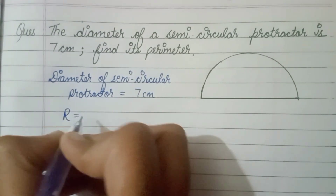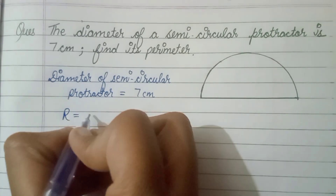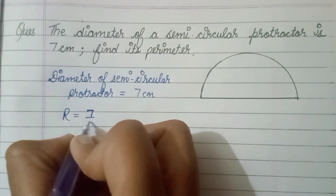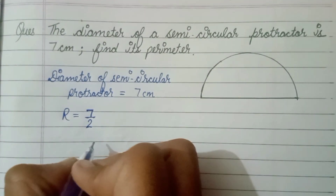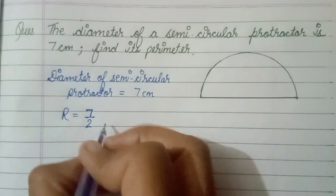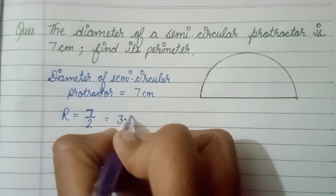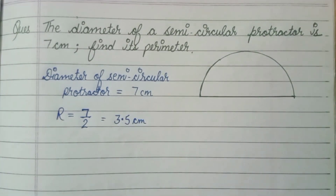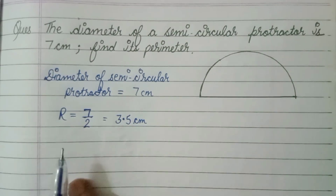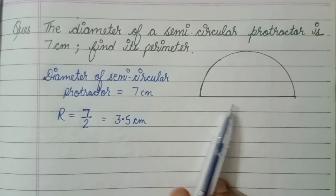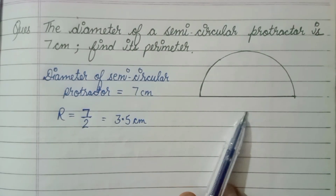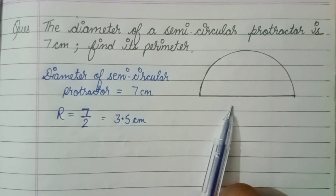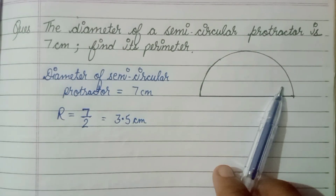If we have the diameter, we can easily find out the radius of the circle. Radius is equal to half of the diameter, that is 7 by 2, which gives us 3.5 centimeters. This is the radius of this semicircle.